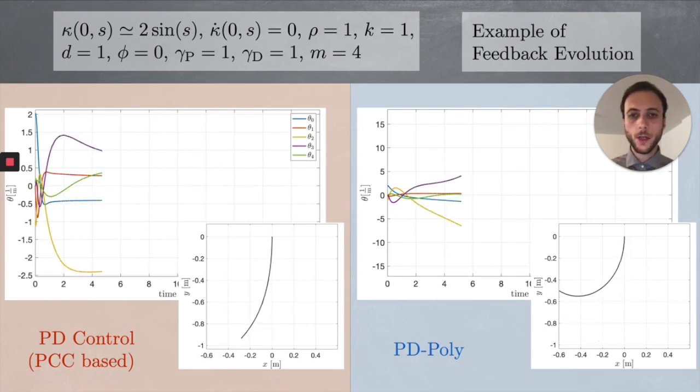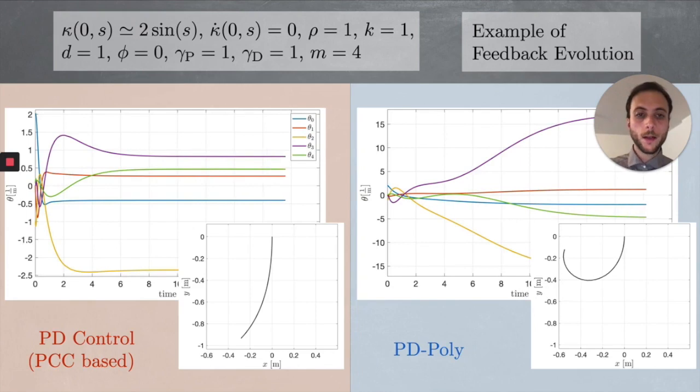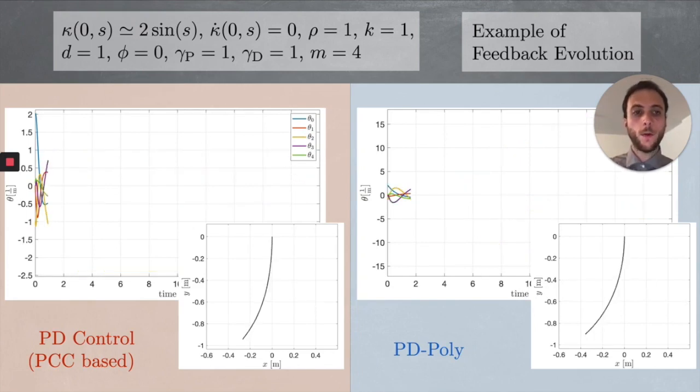But let's see how it works when we close the loop. On the left, you can see the effect on the robot that I showed you in the previous simulations, of a loop closure of a simple constant curvature-based PD controller. On the right, you see the behavior of the system when instead the proposed PD-poly controller is used.